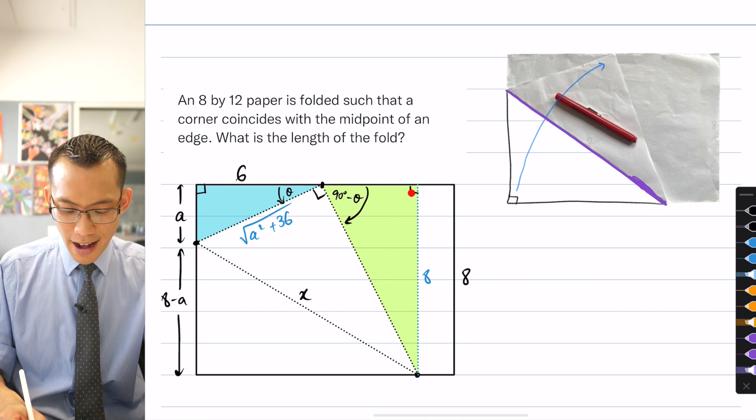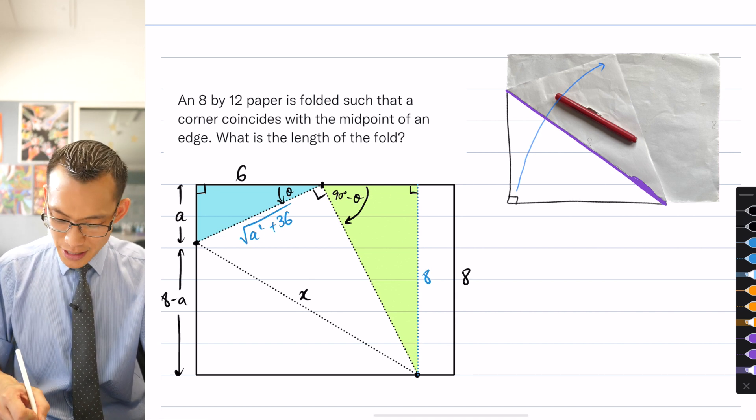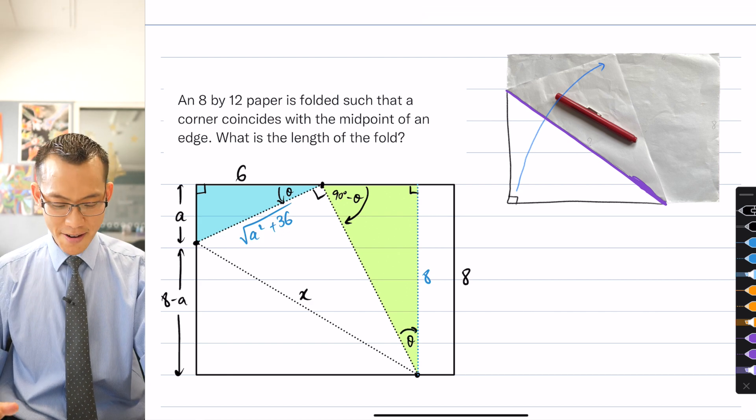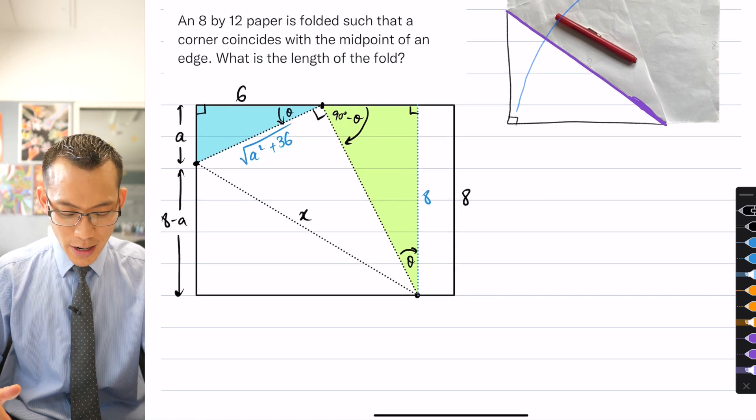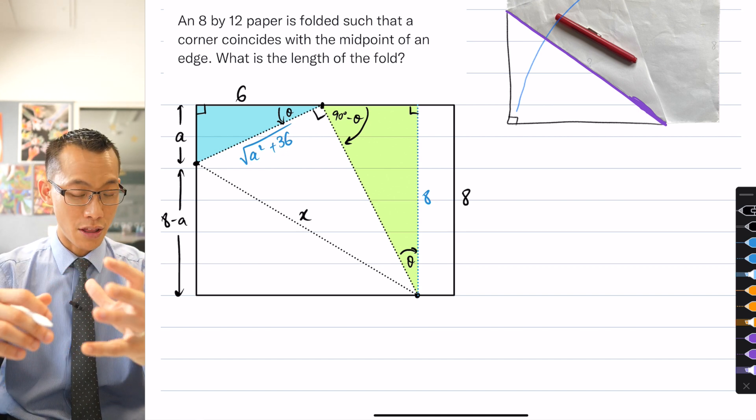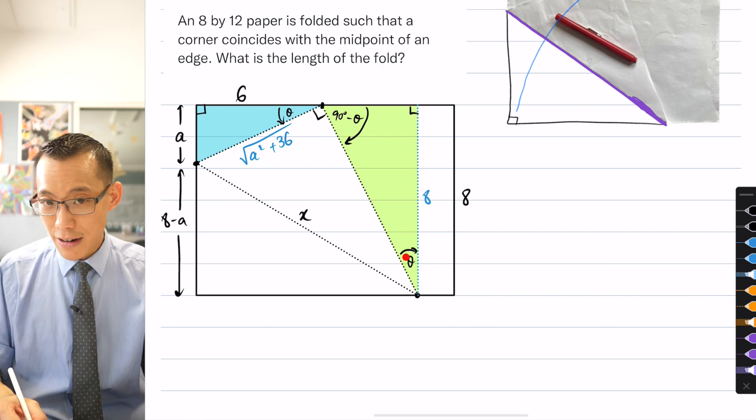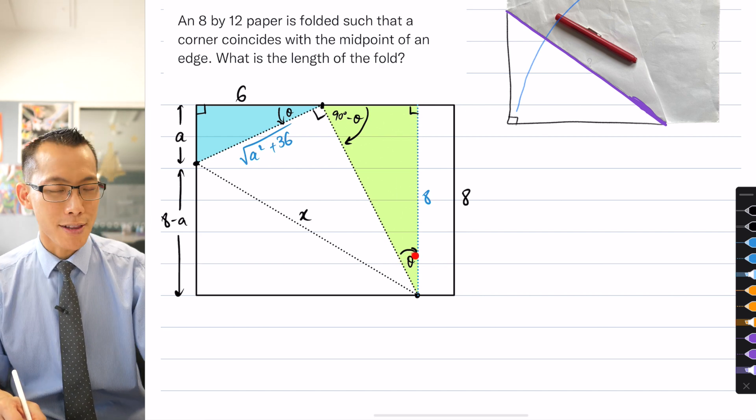And because I've got this angle, I've also got a right angle, that tells you down in the corner that this is also going to be theta. So this is brilliant because what I've got now is I've got two triangles, the blue and the green one, which they're both right-angled. They both have a theta in them. So these are in fact similar to each other. They're going to be equi-angular.